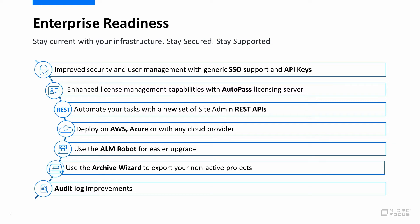We added support for public cloud providers that enables you to deploy ALM on any public cloud such as Azure and AWS. You can now use the ALM robot for easier upgrade and the archive wizard for easier archiving of non-active projects. We also improved the audit log to support more actions such as changes to workflow scripts. All these new security and administrative enhancements will ensure that you're ready for the enterprise.